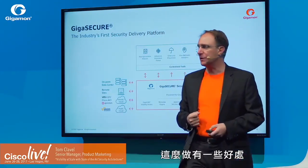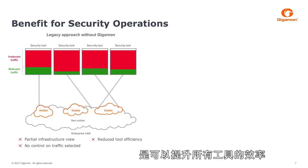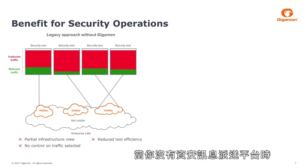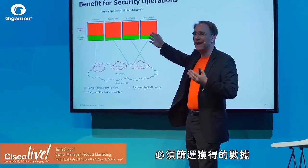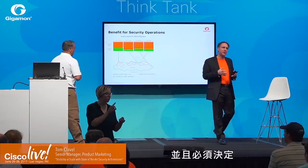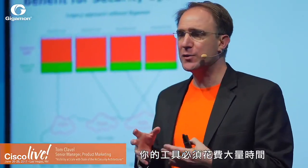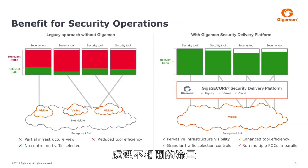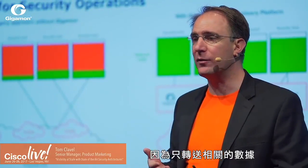There are a few benefits to this. First and most important is that you get more efficiency for your tools. Without a security delivery platform, tools connected directly to your networks have to sift through all data being fed to them, determining which data is relevant and which to ignore — spending time on irrelevant traffic, lowering their utilization. At Gigamon, we increase the utilization of your security tools up to 100% by only forwarding data that is relevant to them.